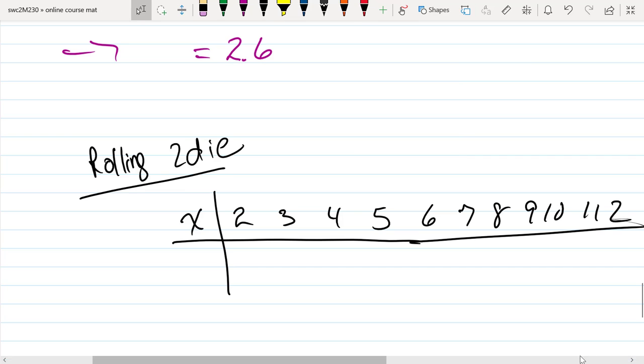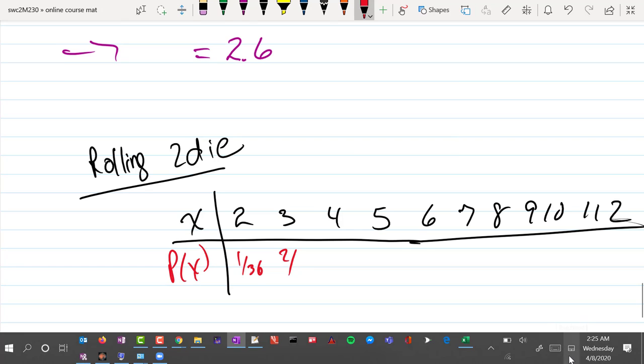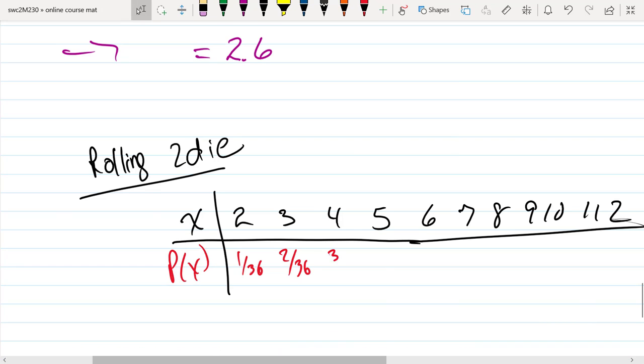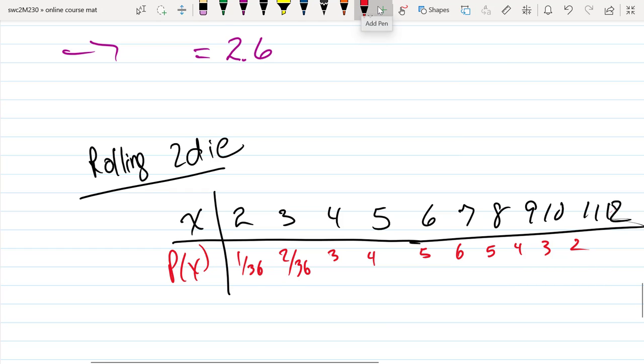And there's a probability associated with each one of those. There's one way out of the 36 that you could get a two, two ways out of the 36 to get a three, and so there's a pattern here that looks like this, all the way back down to the probability of getting a 12 being just as improbable as getting snake eyes, a one and a one, 1 over 36.